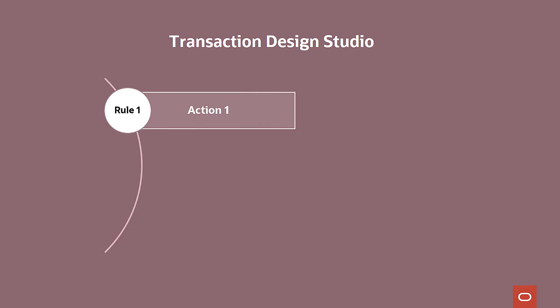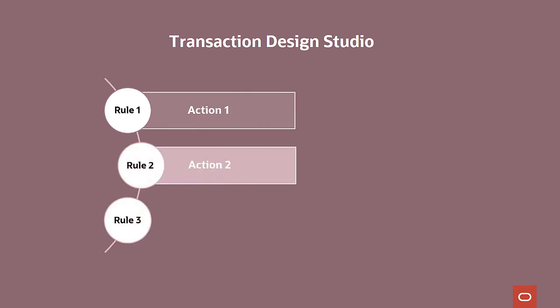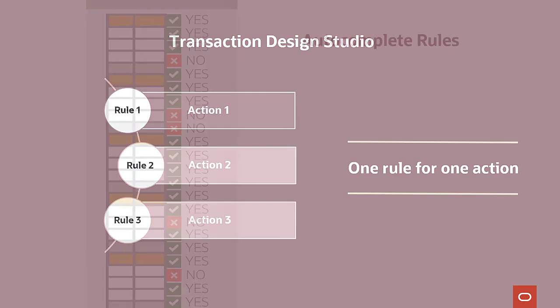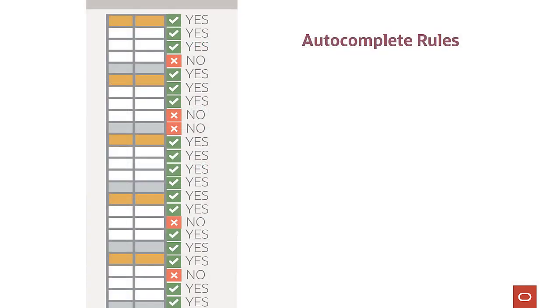To configure rules in the Transaction Design Studio, you have to select an action first — for example, Add Assignment or Hire an Employee. If you want to show or hide certain fields and sections, you have to go to every action and create a rule for every action. This is because it is a purely UI driven framework.